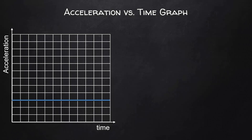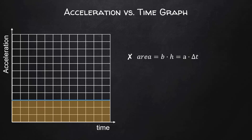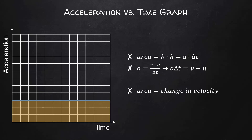Finally, for an acceleration vs. time graph, the area — base times height — is acceleration times change in time. From the acceleration equation, acceleration times change in time equals V minus U, so the area of an acceleration vs. time graph is the change in velocity of the object. That's it for now. See you next time.